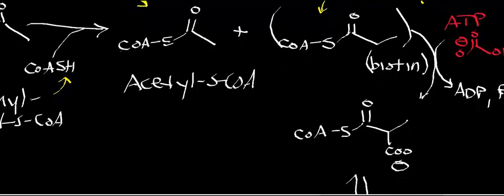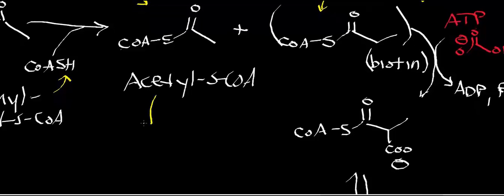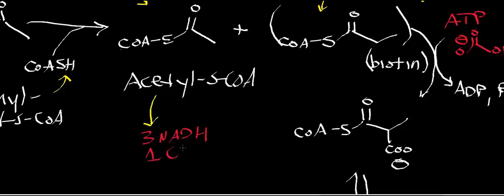Acetyl-CoA goes into the TCA cycle. One acetyl-CoA per cycle yields three NADHs, one FADH2 (going to one reduced CoQ/ubiquinol), and one nucleoside triphosphate — either GTP or ATP.